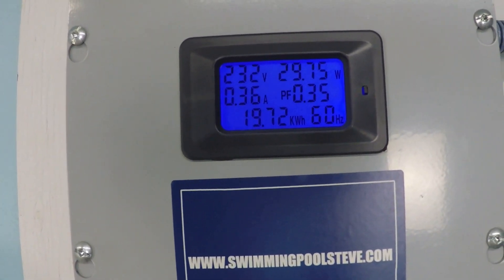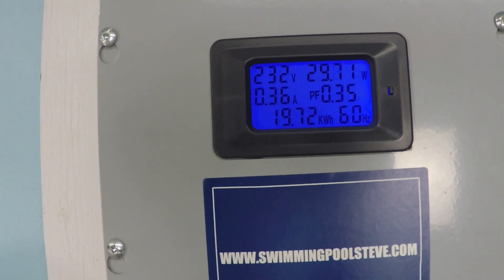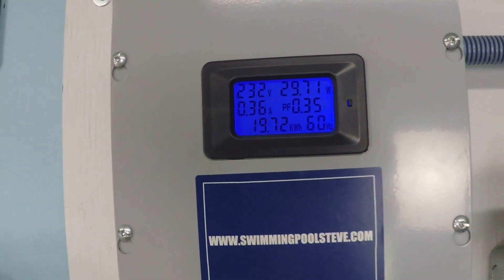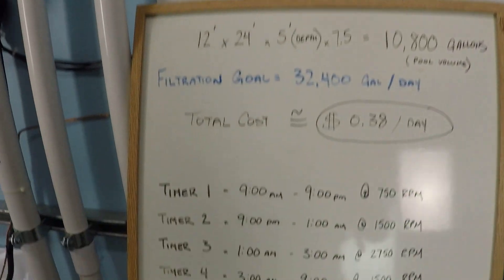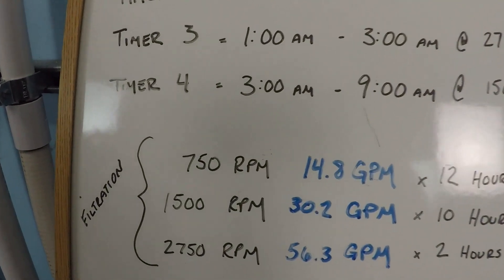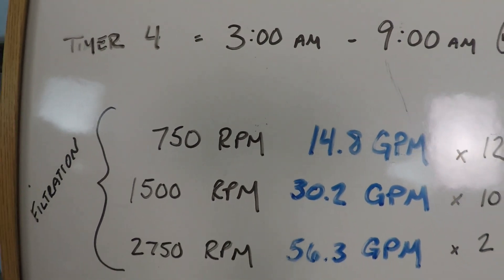Right around 30 watts. Half of a 60 watt light bulb. That's bananas. That's so little power, it's crazy. But as you can see, we're still getting 15 gallons per minute. About 14.8 gallons per minute.